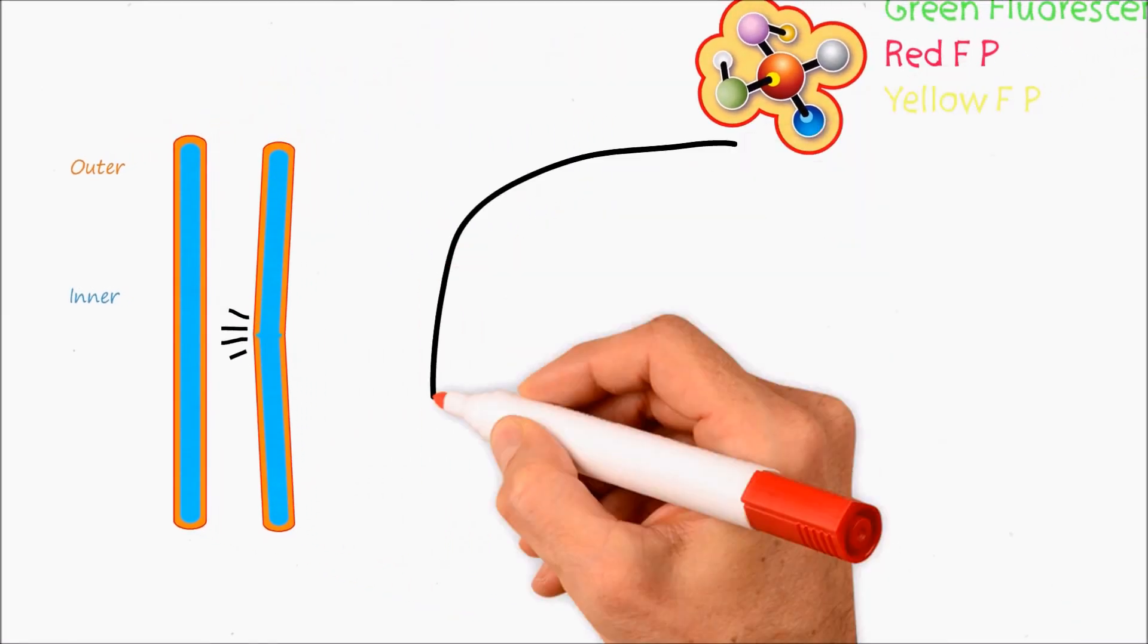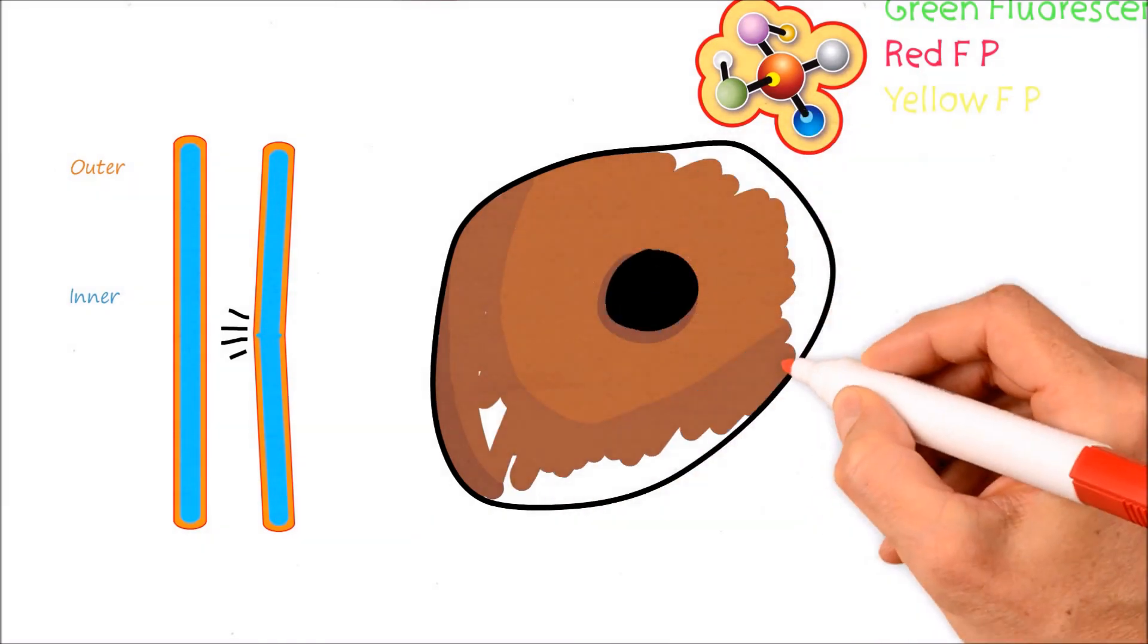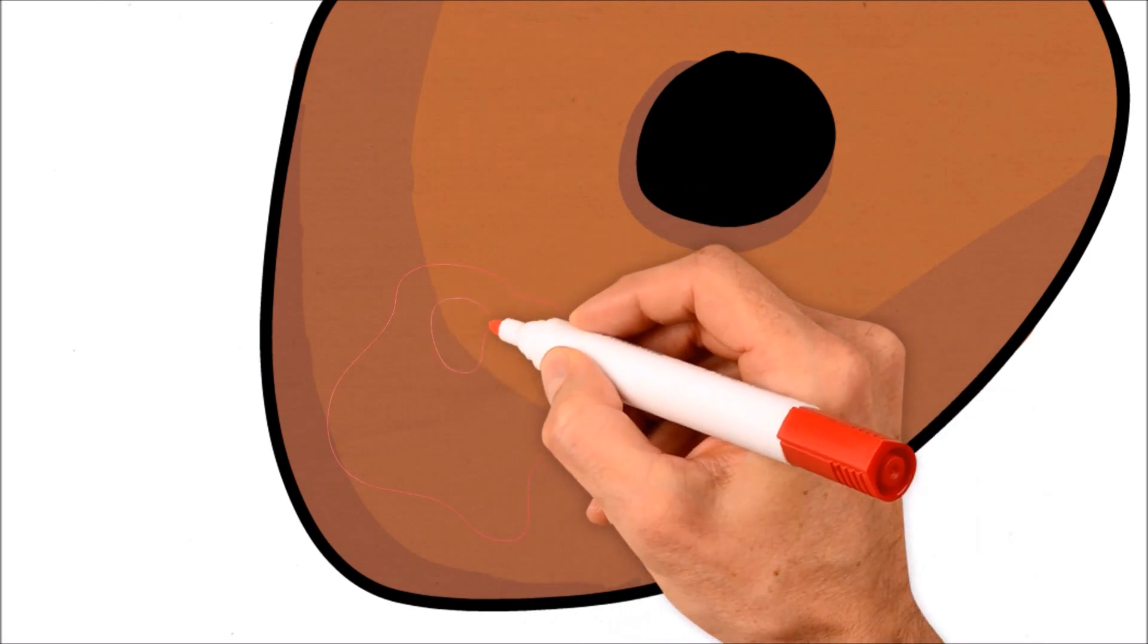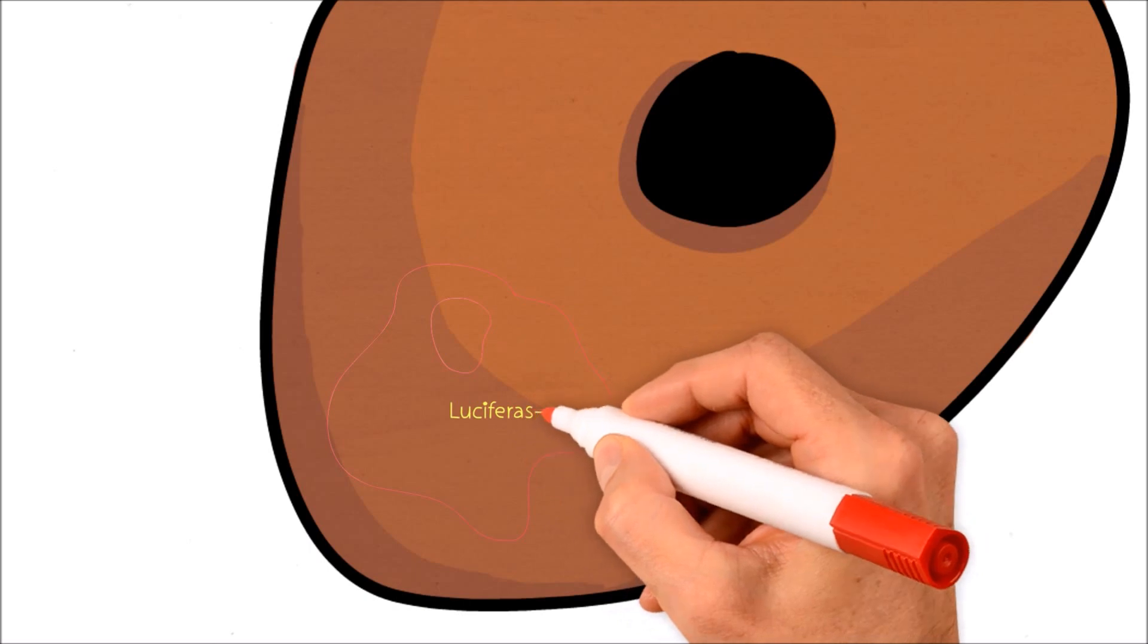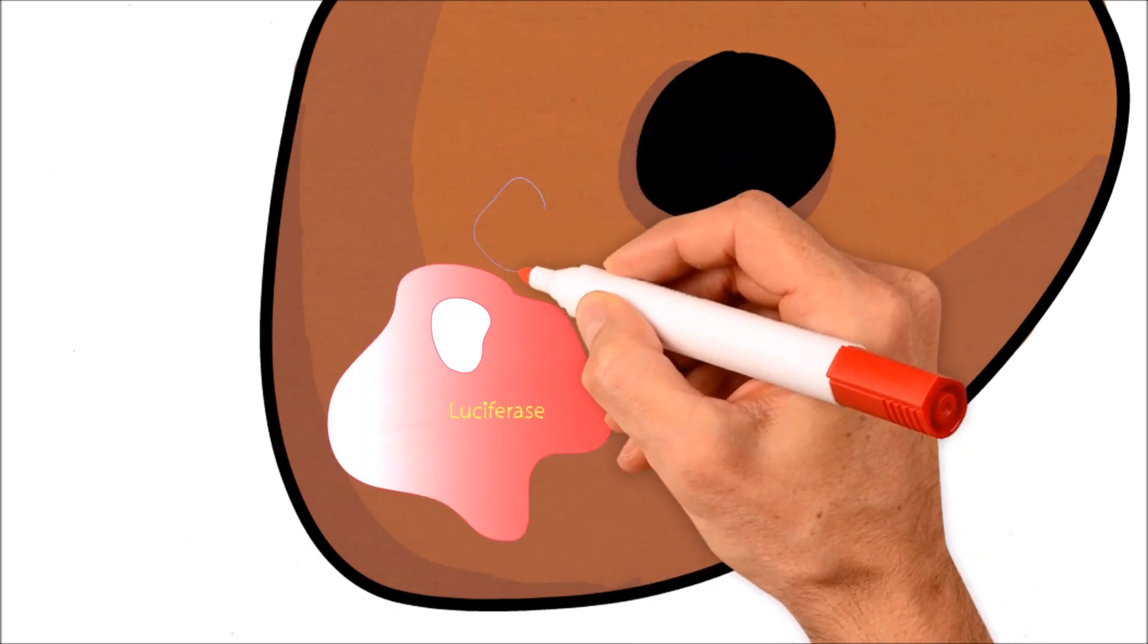When it comes to living organisms, the molecules that are required for generating light are situated within the same compartment. For example, here there is an enzyme that's required for generating bioluminescence called luciferase, and the substrate of this enzyme is called luciferin.